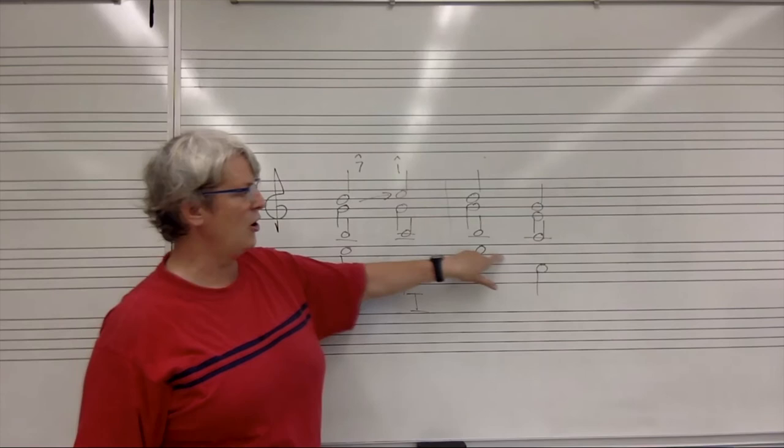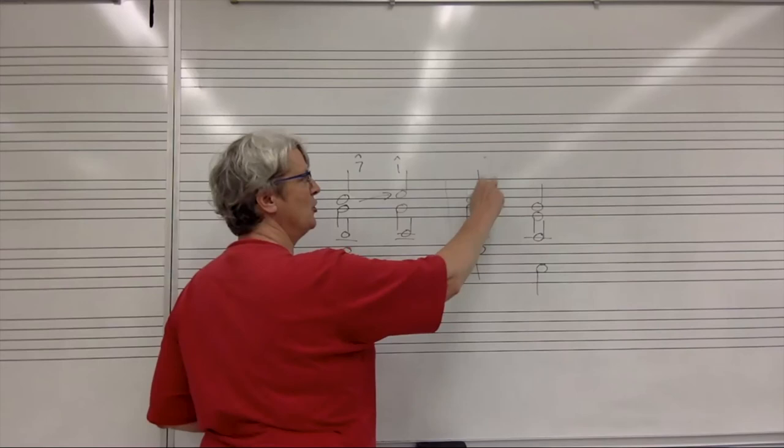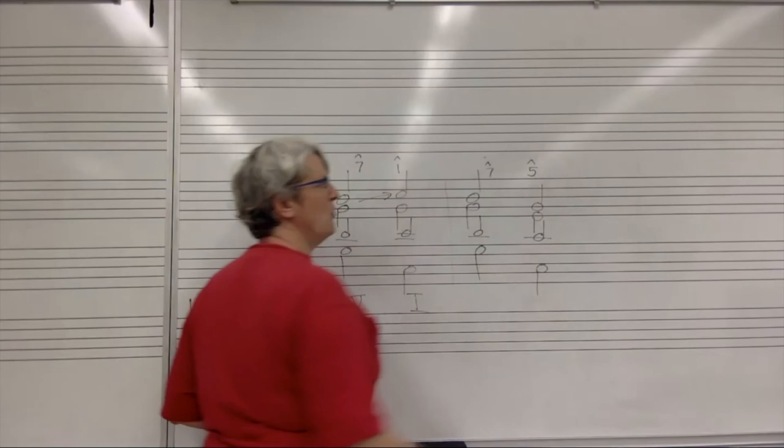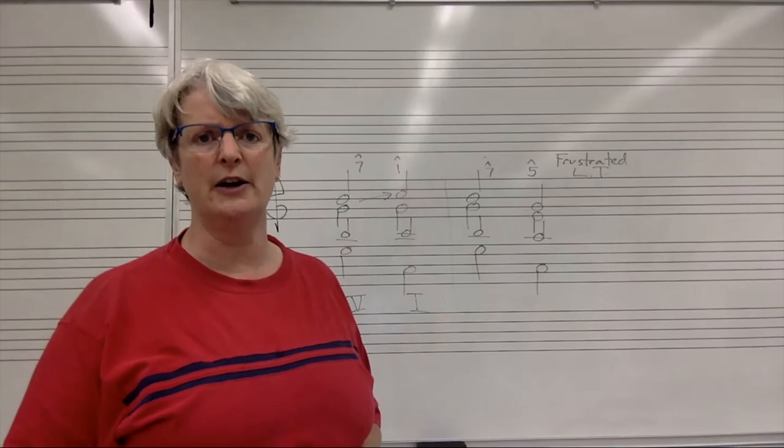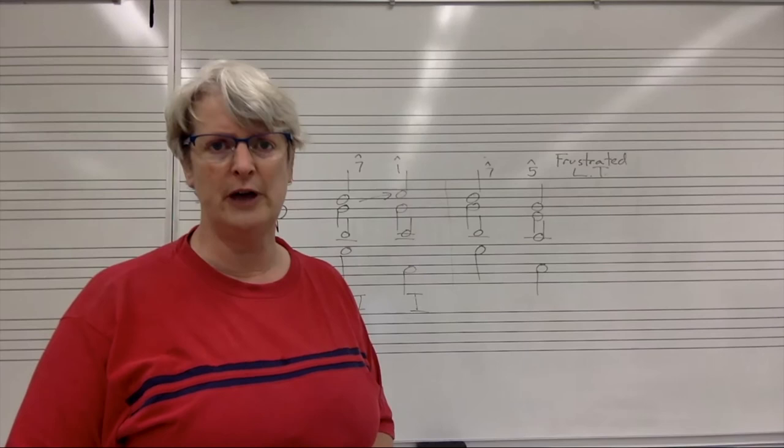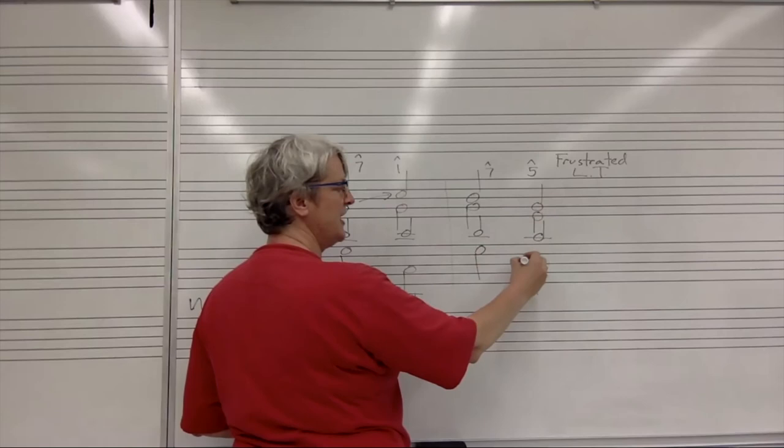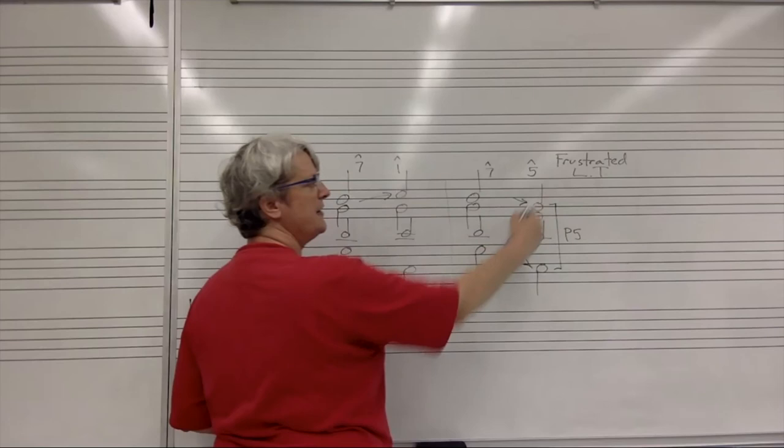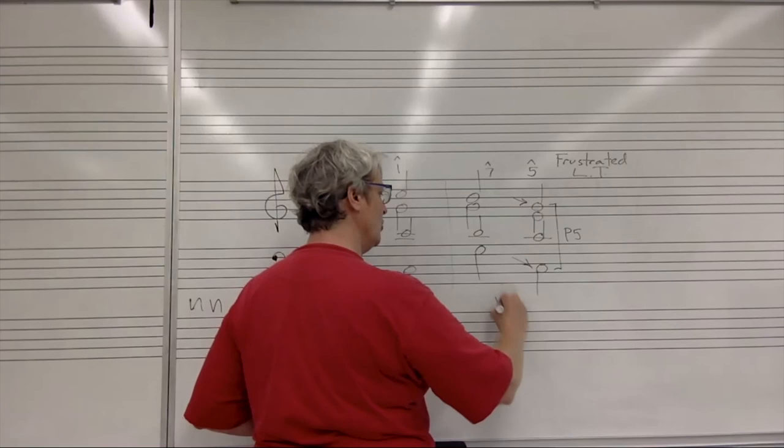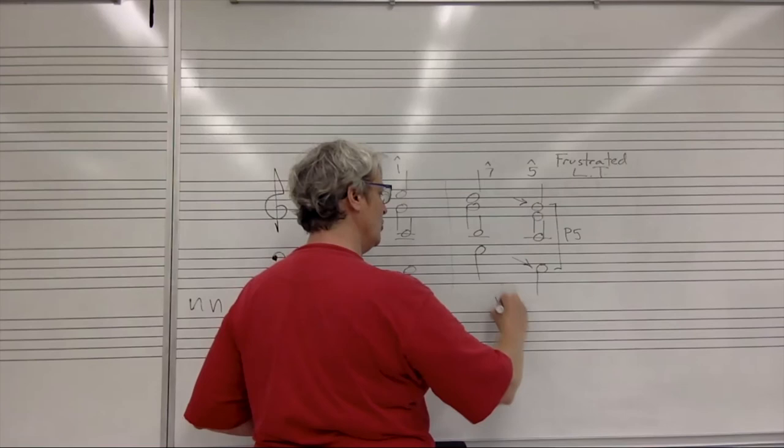If it doesn't resolve to tonic, we'll get something like this. Here, incidentally, is an example of all four voices moving down. So that might be a little bit problematic. Here we have scale degree seven, and instead of going to scale degree one, it goes to scale degree five. And this is what's called a frustrated leading tone. The poor leading tone really wants to go to tonic, and if you don't let it go to tonic, it will be so frustrated. You don't want to do that. Okay, a byproduct of having this frustrated leading tone is that we're approaching the perfect fifth between the bass and the soprano in similar motion, and there's a leap in the soprano. So now, in addition to the frustrated leading tone, we also have a direct perfect fifth.